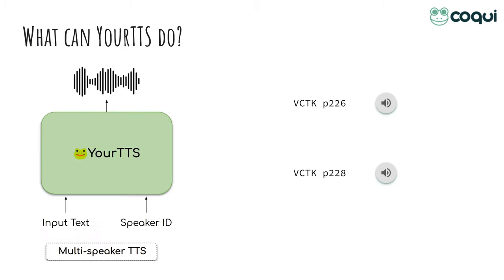What is a multi-speaker TTS model? Like a regular TTS model, you input text and you get the audio version of it out. The difference is that instead of being limited to only one voice, you can synthesize the same text in multiple different voices by providing the associated speaker ID. During training, the model associates the voices it learns to synthesize with their respective speaker IDs.